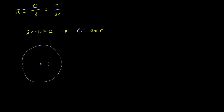Here is the positive x-axis. And the way that we measure angles when we talk about radians, we're really talking about the angle subtended by something of a certain arc length.